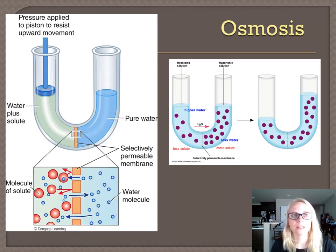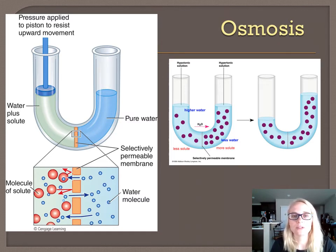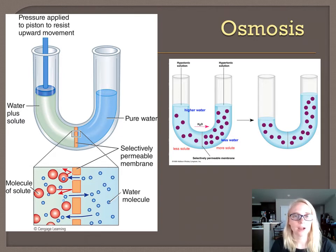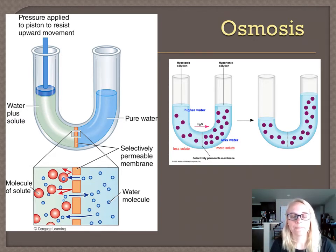Our next concept is osmosis — the diffusion of water. It's a very specific type of diffusion: the diffusion of water through a selectively permeable membrane until equilibrium is reached. We can think of it the same way as diffusion: if you have more water on one side and less on the other, there's a gradient, and water molecules will move from high to low water concentration.